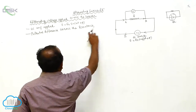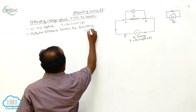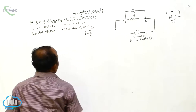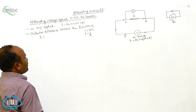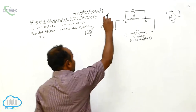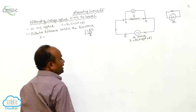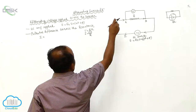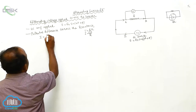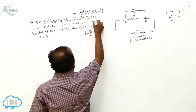Now I want to calculate the potential difference. According to Ohm's law, V is equal to IR, so I is equal to V by R. Whatever the potential difference is there, that is equivalent to the EMF. So I is equal to E by R. This is called the first equation.